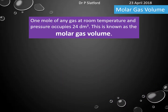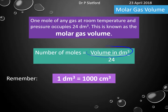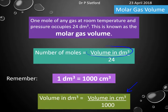Put into an equation: the number of moles is equal to the volume in dm³ divided by 24. Remembering that 1 dm³ is equal to 1000 cm³ — we might sometimes be given a question where the volume is given in cubic centimeters, so we need to make sure we do this conversion so that we have the correct units.